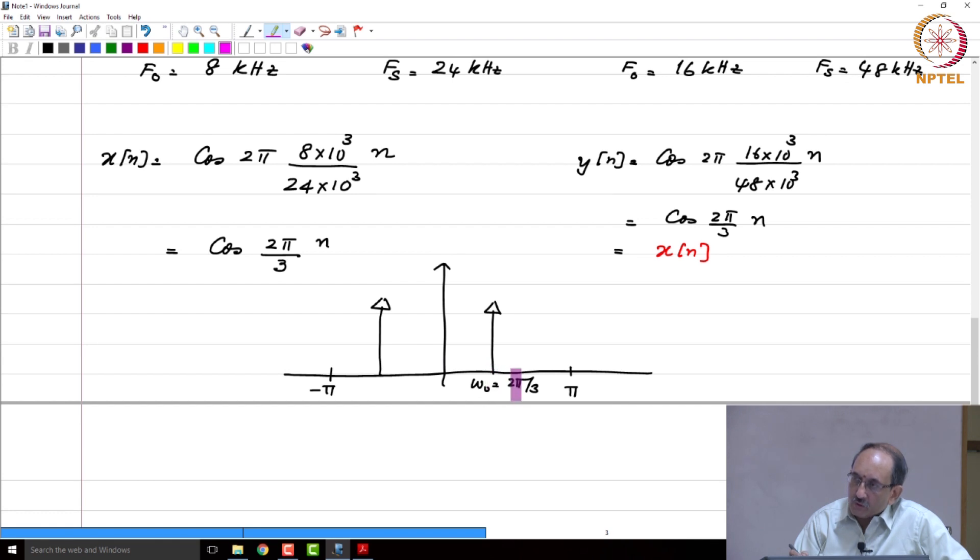Therefore, given the fact that ω₀ is 2π/3, to what true analog frequency does this correspond to? That is, is this 8 kilohertz or 16, you cannot tell unless you have the sampling frequency information. So, going back from this to the true frequency, you need f_s information.